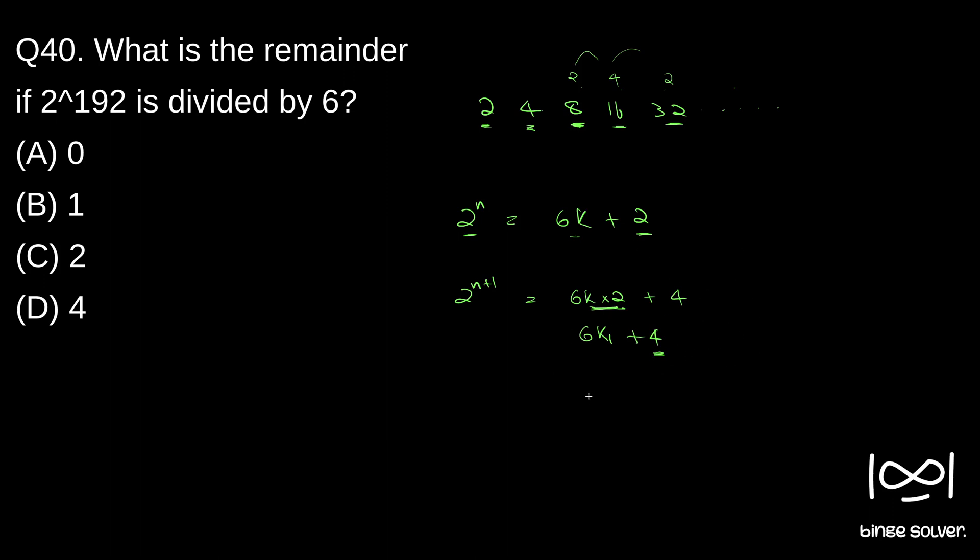So next we will be having 4 as remainder. Similarly, this cycle repeats. If you multiply throughout again by 2, we will get 2 raised to n plus 2 as 6k times 2 plus 4 times 2 equals 8. 8 can be written as 6 plus 2, so this again adds with this, so this can be written as 6k2 plus 2. As you can see, the remainder repeats: it becomes 2, then 4, then again 2, then the whole process repeats.